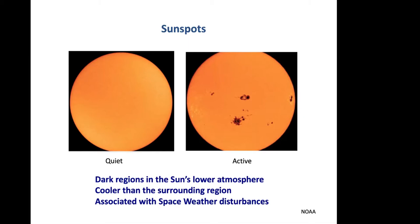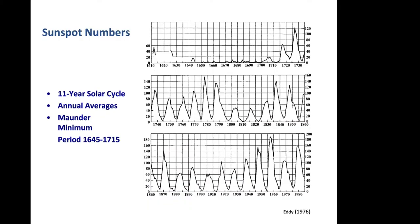Sunspots exhibit an 11-year solar cycle. High sunspot numbers mean the sun is very active, leading to intense space weather. From about 1645 to 1715, there was very little solar activity — a period known as the Maunder Minimum — which coincides with a very cold period on Earth known as the Little Ice Age, though it is not clear if low solar activity was the cause.